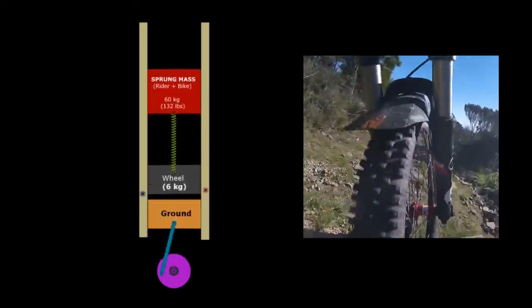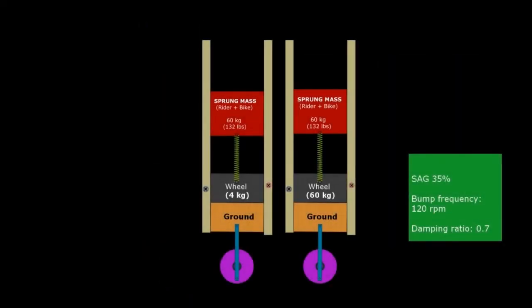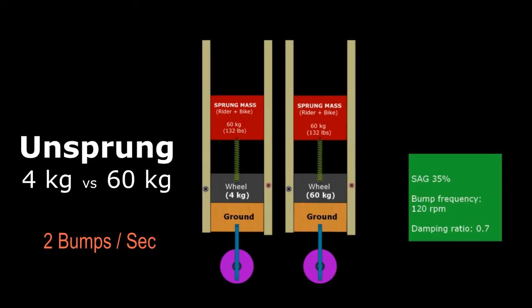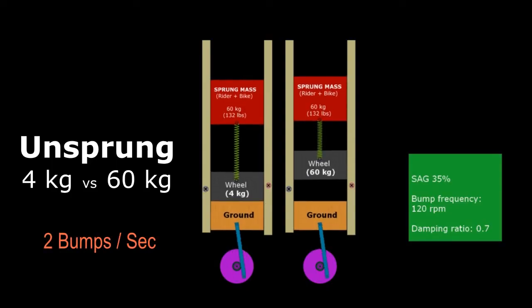The ground moves up and down very fast and you can change the speed of the movement, so basically we are simulating bumps. In our first simulation we are going to compare the extremes. We are going to compare a normal unsprung weight, 4 kilograms, against a very unrealistic value of 60 kilograms. That will be something like a tractor wheel on your bike.